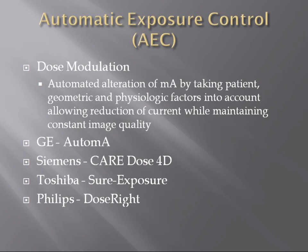We're talking about the scanner's ability to automatically change its dose — something referred to as automatic exposure control. We know automatic exposure control from conventional radiography, where a photo timer shuts off the camera once a photon threshold is reached. In CT, we use dose modulation — an automated alteration of the MA by taking patient, geometric, and physiologic factors into account, allowing reduction of current while maintaining constant image quality. Each vendor has their own name for it: GE has Auto mA, Siemens has CARE Dose 4D, Toshiba has Sure Exposure, and Philips has Dose Right — but all are forms of automatic exposure control or dose modulation.